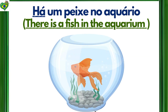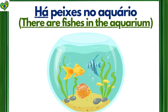Há um peixe no aquário. There is a fish in the aquarium. Há peixes no aquário. There are fishes in the aquarium.